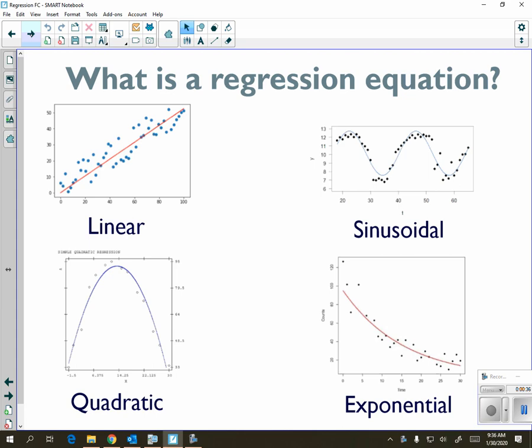If your data resembles a parabola, like the bottom left, you're going to go with a quadratic. If your data seems to be periodic, kind of like a wave, you're going to go with sinusoidal, because sinusoidal represents trig equations, like sine and cosine.